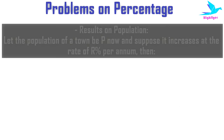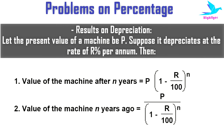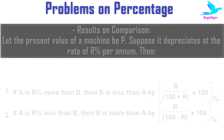Now let's look at some results on depreciation. Let the present value of a machine be P. Suppose it depreciates at the rate of R percent per annum. Then the value of the machine after N years would be P into (1 - R/100) to the power N, and the value of the machine N years ago will be P by (1 - R/100) to the power N.